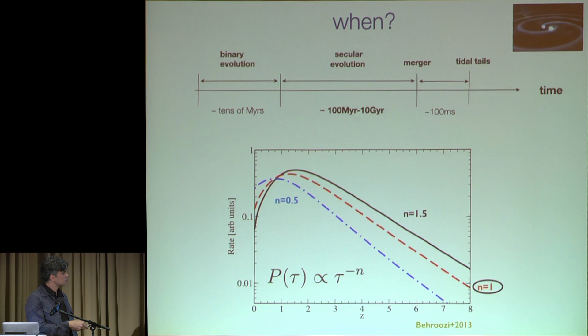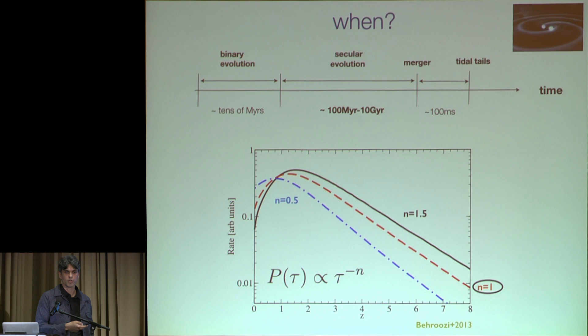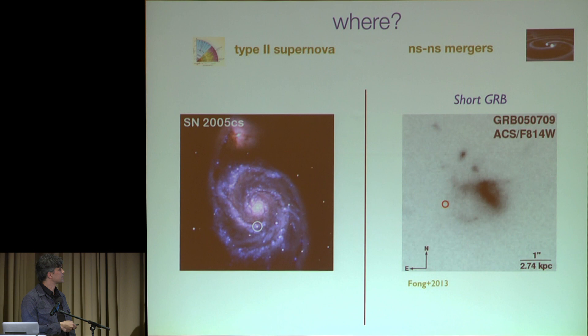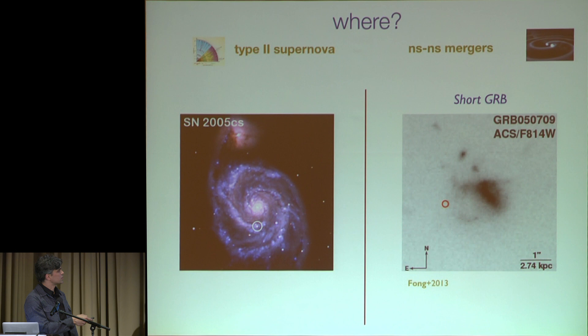You have the standard star formation rate, and the delay time distribution is usually well fit by an N=1 power law, assuming separation distributed as log-a flat. Type II supernovae deposit elements directly into the gas. We haven't seen a kilonova directly, but if short GRBs are powered by these compact mergers — for which there is strong evidence — they're basically enriching the galaxy from the outside inwards.